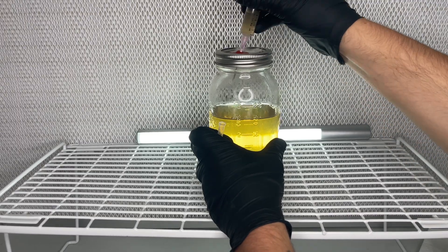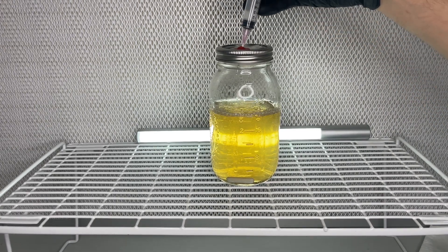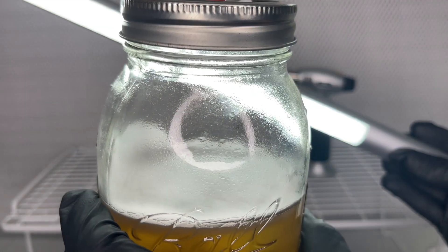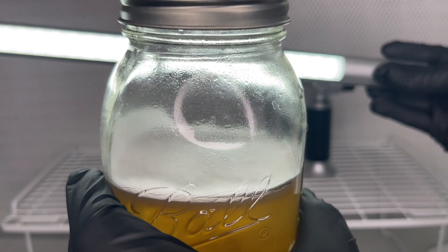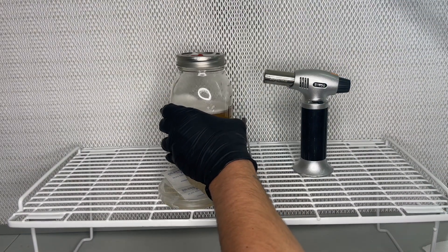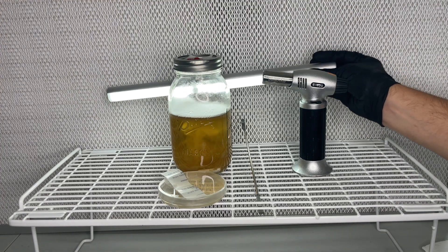Using the same syringe that I tested on agar, I inoculate a jar of sterilized honey water. Now if you let the jar grow for about one month without stirring or disturbing the jar, the mycelium will start growing on the surface and eventually start growing up the side of the glass.